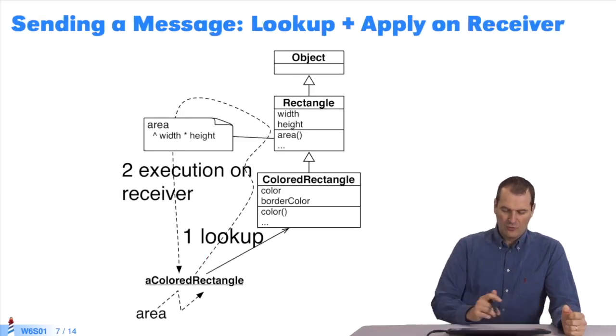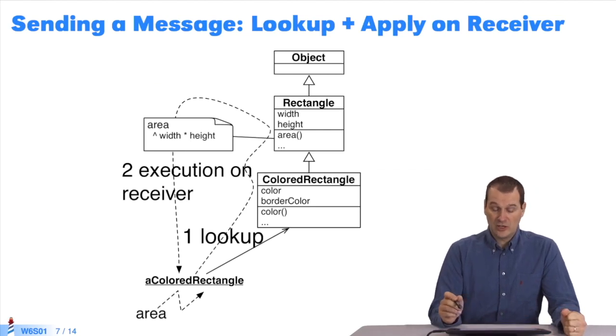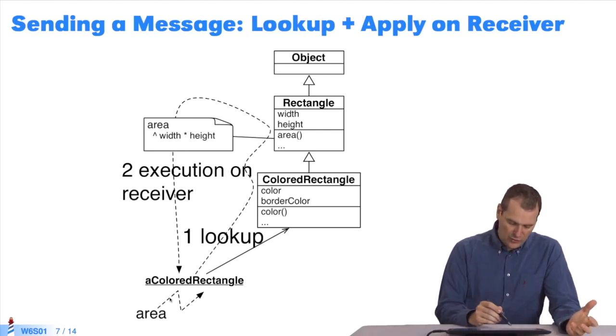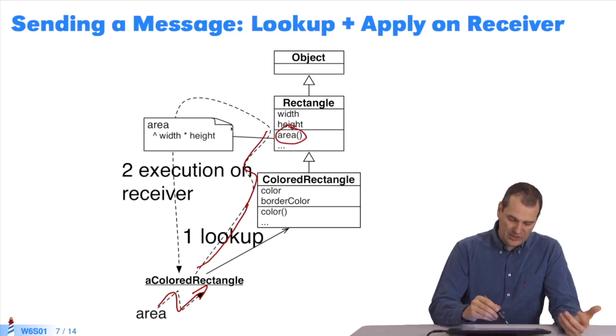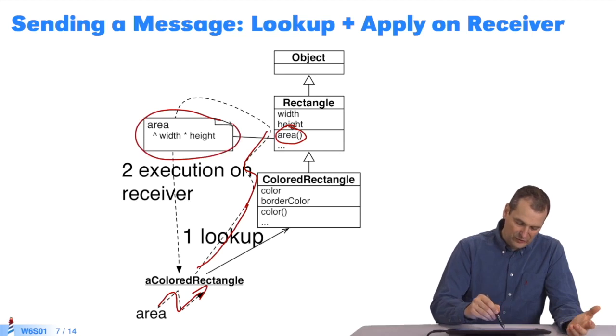Let's see. You remember how message lookup works? I send a message to an instance, for example, colored rectangle. I look inside the colored rectangle class to see if the method in question is defined. It's not. Area is not defined. I find it up here. I apply the definition I found. On what? On the receiver.